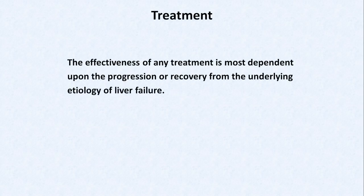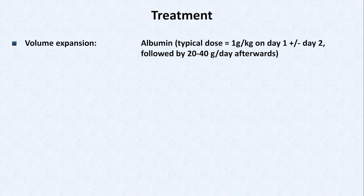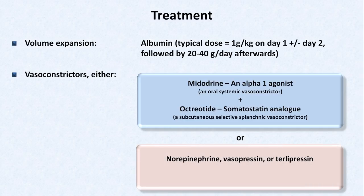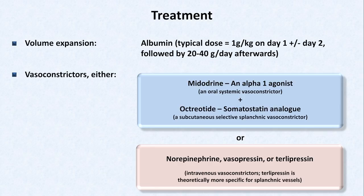When it comes to treatment, the effectiveness of any intervention is most dependent upon the progression or recovery from the underlying etiology of liver failure. There are two conventional first-line treatments. The first is volume expansion with albumin. The second is vasoconstrictors — one choice is the combination of midodrine, an oral alpha-1 agonist, and octreotide, a parenteral somatostatin analog given subcutaneously. The other vasoconstrictor option is an intravenous vasopressor such as norepinephrine, vasopressin, or — in much of the world outside the US — terlipressin, a vasopressin analog theoretically more specific for splanchnic vessels, though not approved in the US.